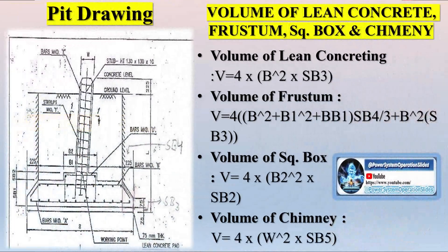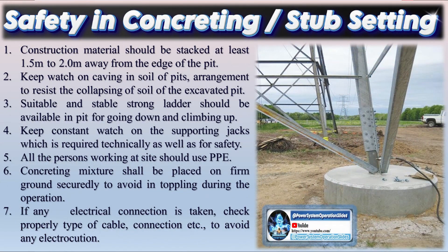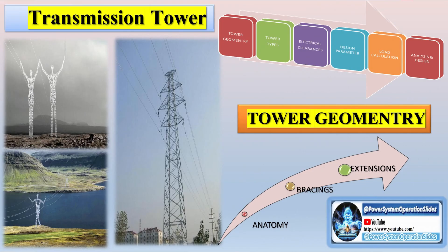Once the soil investigation is complete and the foundation designs have been finalized, the project can move forward to finalizing the tower schedule. The tower schedule is finalized in two phases: the partial tower schedule and the full tower schedule. The partial tower schedule is typically finalized first, after the detailed survey and soil investigation have been completed for specific sections of the route. This allows construction to begin in those sections while the remaining portions are still undergoing surveys and investigations. The partial schedule includes the precise location, height, and type of tower for each segment, as well as the required foundation design, helping streamline the overall project timeline.